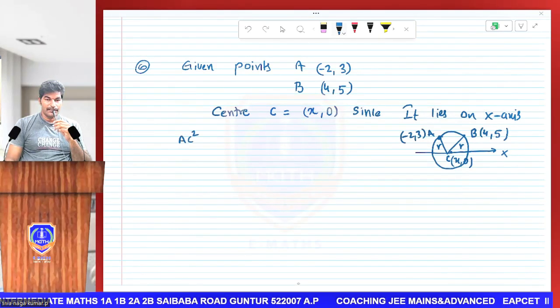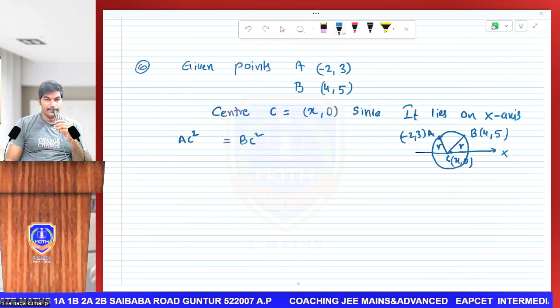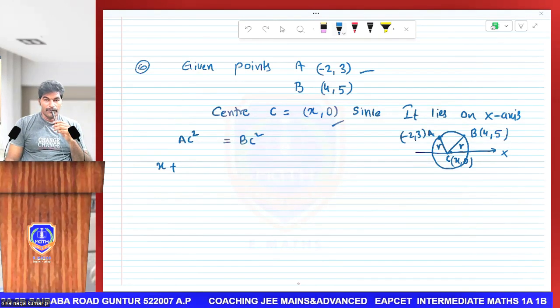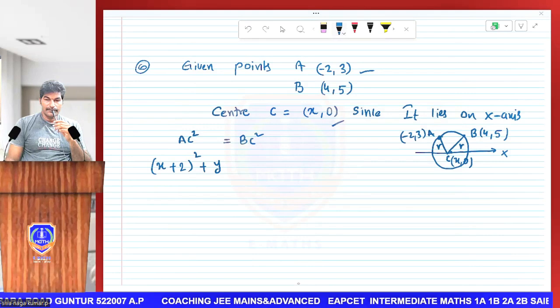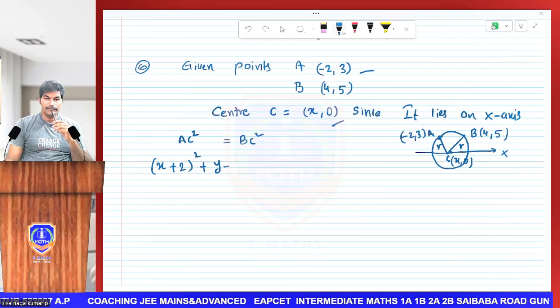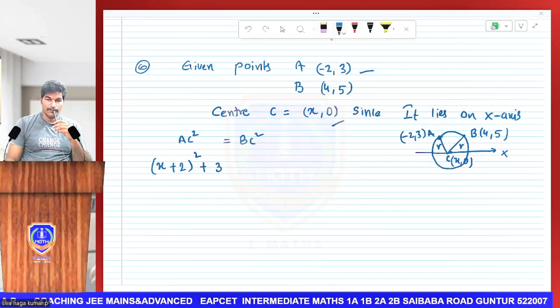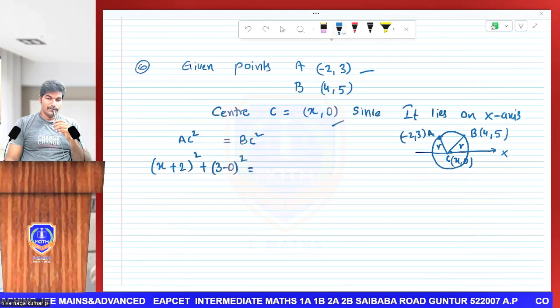AC² equals BC². Radius same for circle, then AC². A point to C point, distance formula: (x + 2)² + (y - y₁), C point 0. Here A point 3. A point 3, C point 0.